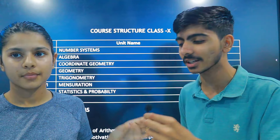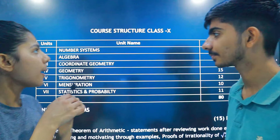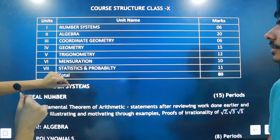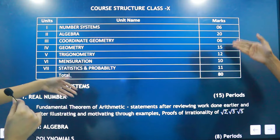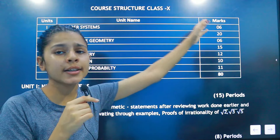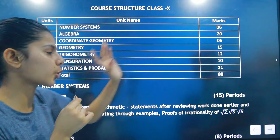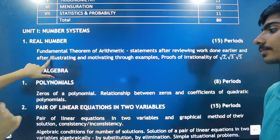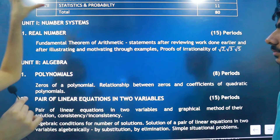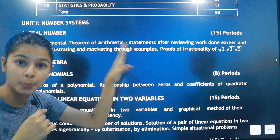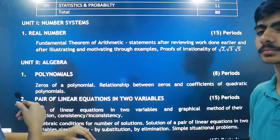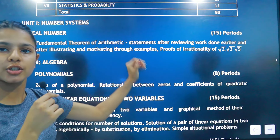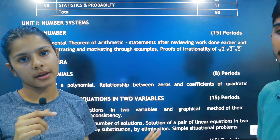Let's look at the syllabus here. There are different units: Number System, Algebra, Coordinate Geometry, and marks are given for how many marks will come from these units. The first chapter is Real Numbers. The key topics are the Fundamental Theorem of Arithmetic and proofs of irrationality. These are what you will read in this chapter.